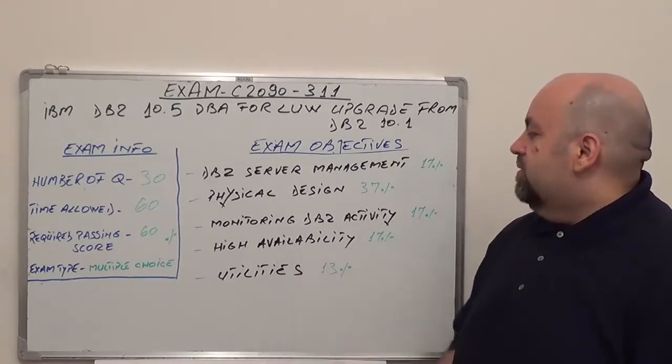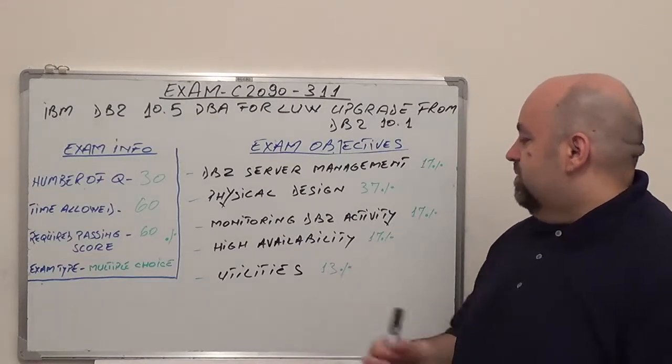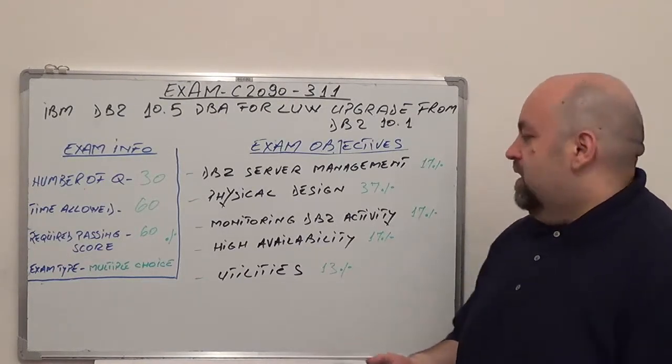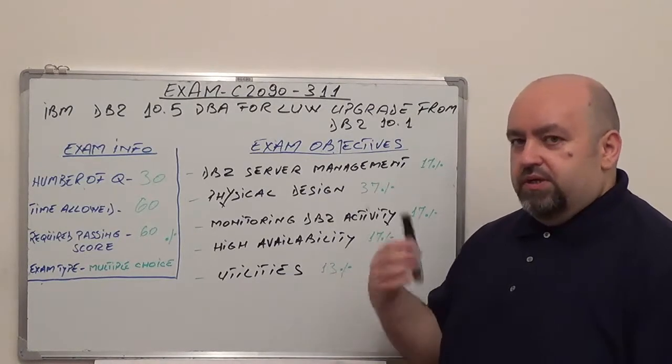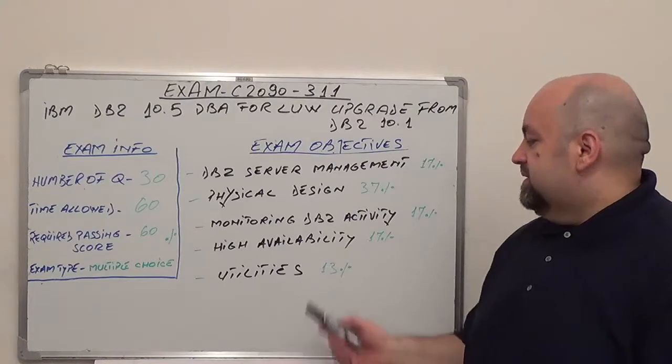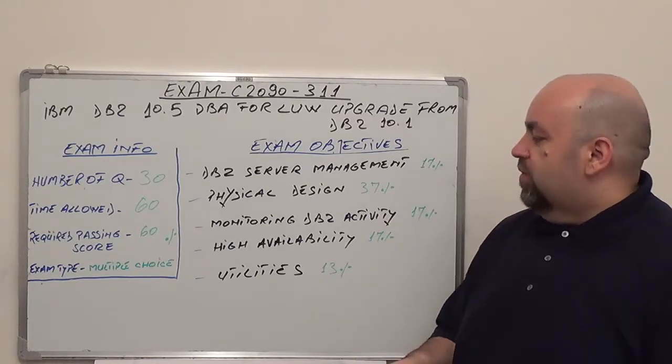Third one is going to be monitoring DB2 activity, 17% from total of questions. Next one is high availability, also 17% from total of questions. And of course, the last one is going to be utilities with 13% from total of questions.